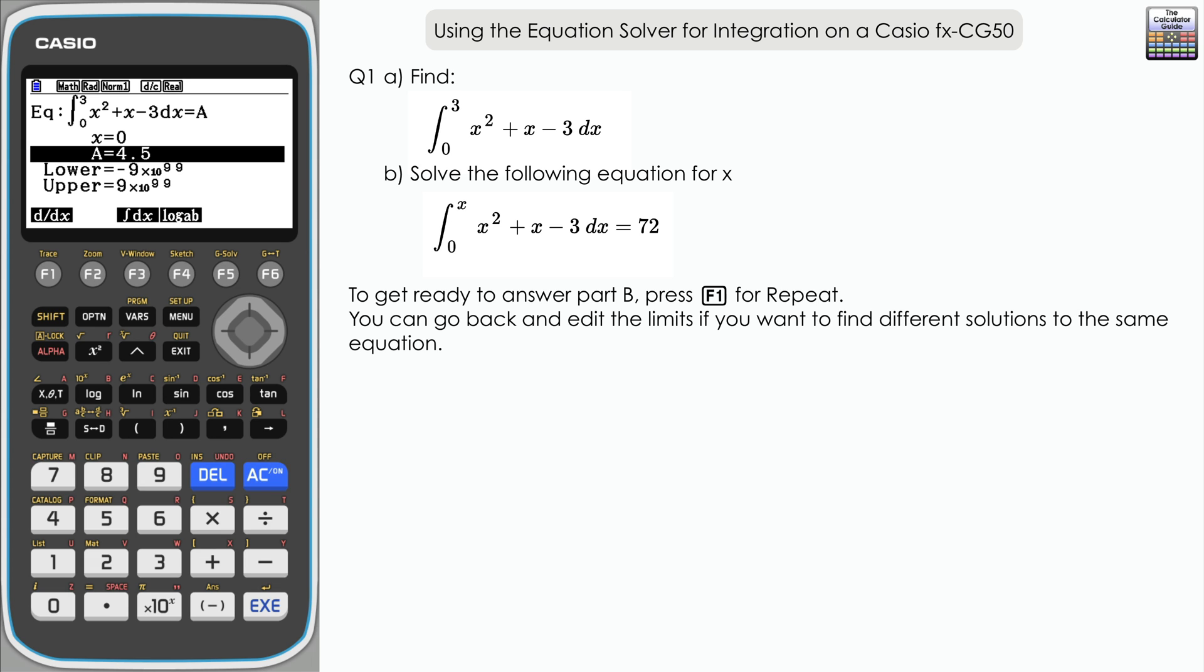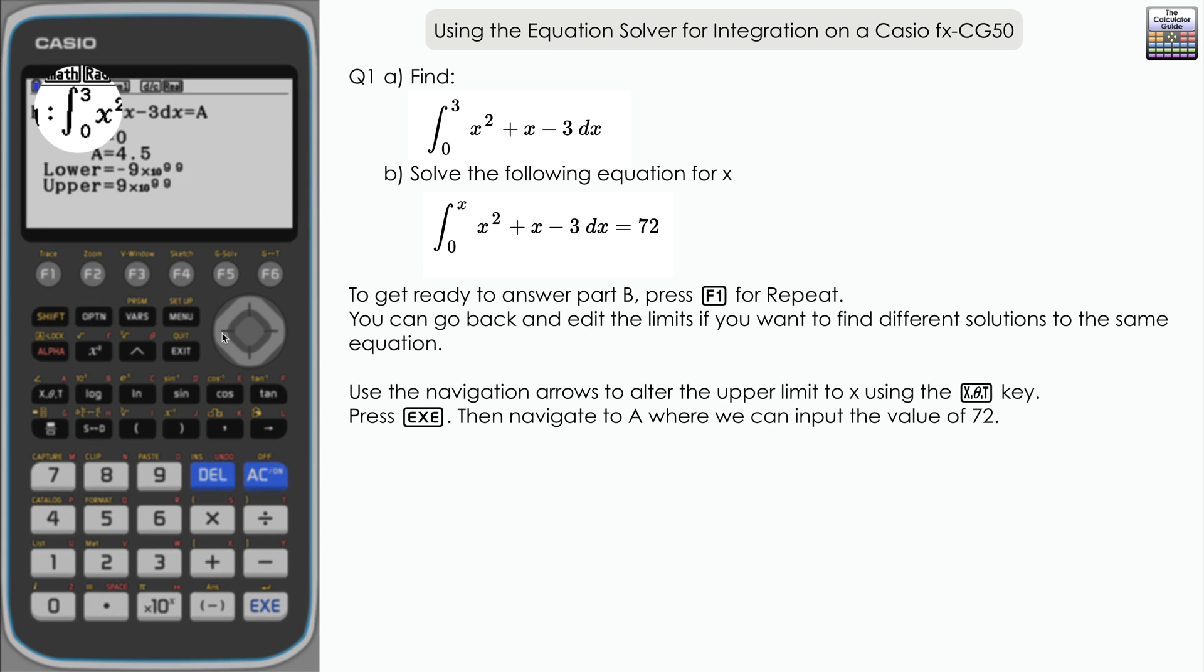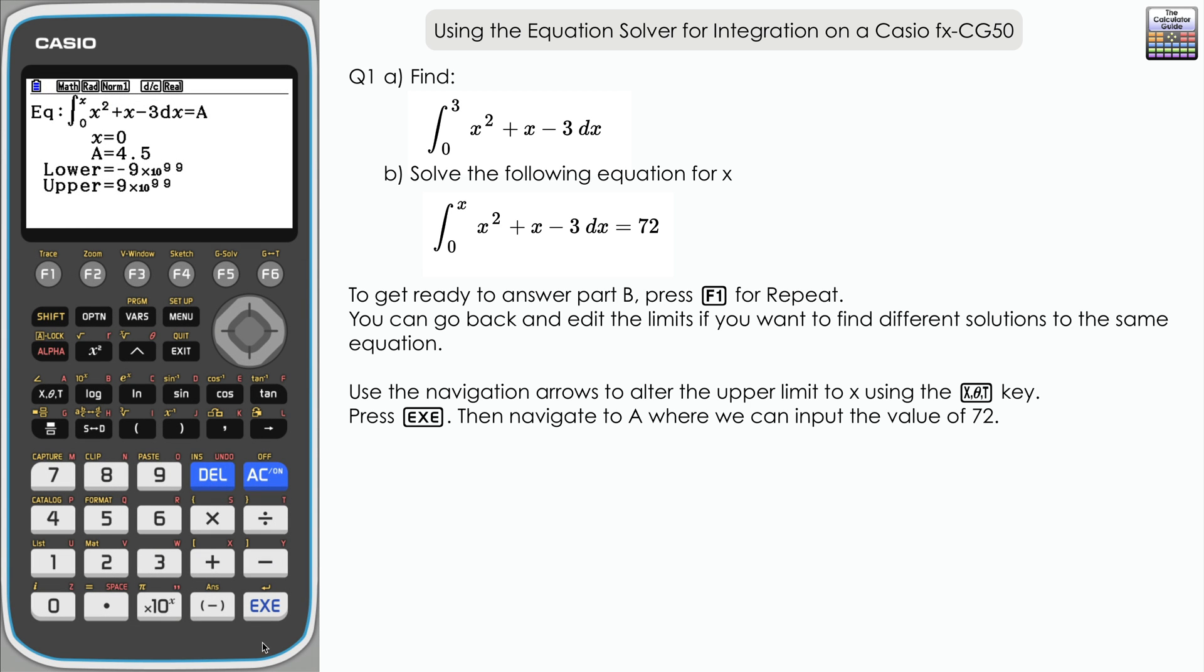Let's move on to part B. We're going to alter our input slightly because the upper limit is unknown. It's a problem-solving question. We're still going to keep equals A in there. The first thing to do is alter the upper limit to X. Use the arrows to navigate back to the upper limit, delete that, and swap it out for X. Then press execute. We want to navigate to A. We know what A is in this case—we want it to equal 72, so input 72 as our value for A.